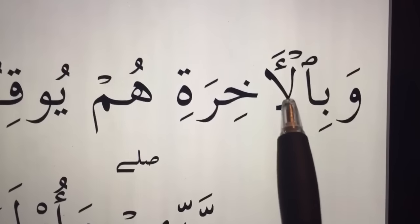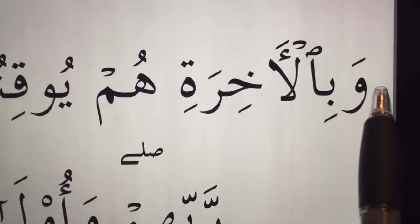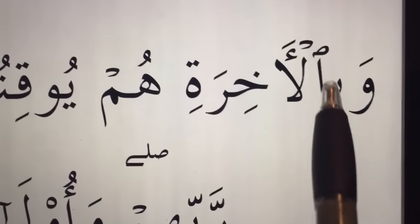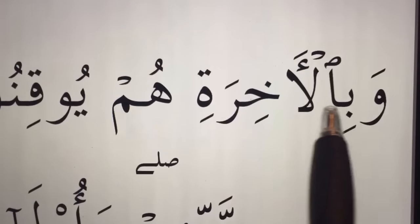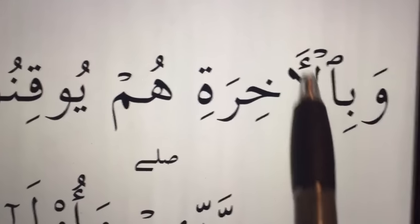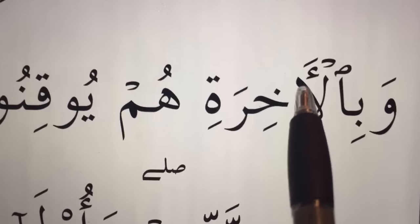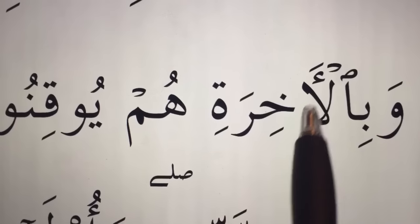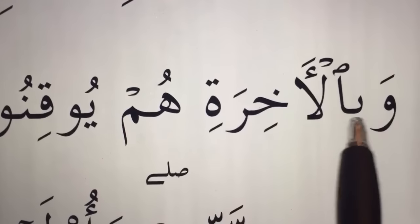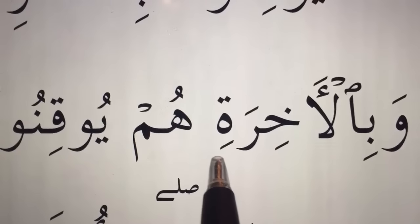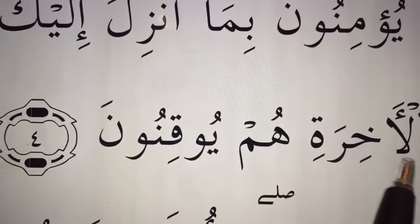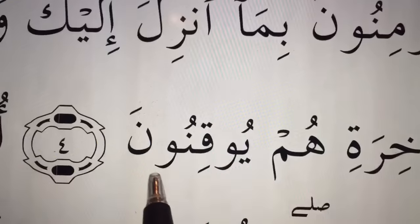Wa bil-akhirati — this one's tricky. It starts with wa, the hamza is dropped here. Alif-lam becomes il, like an il sound. So it's bil — the hamza is first, followed by this, so it's slightly extended: bil-akhirati. Wa bil-akhirati hum yuqinun.